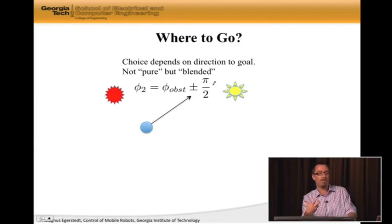And the question is, which one should we choose? Typically that depends on where the goal is. So, we should pick, in this case, minus pi over two, because that moves us closer to the goal, while plus pi over two moves us further away from the goal. And the punchline here is really that this is not a pure strategy, because we need to know where the goal is. Instead, what we're doing is we're actually, I'm calling it blended, in the sense that we're taking the direction to the goal into account when we are figuring out in which direction we should be going.